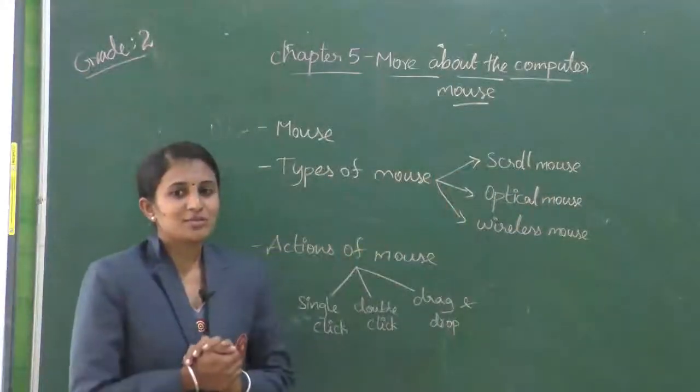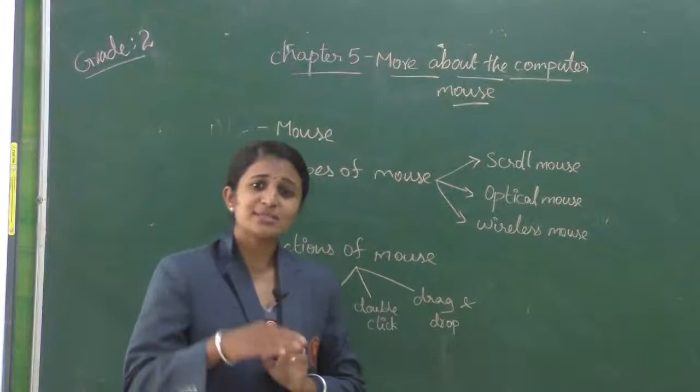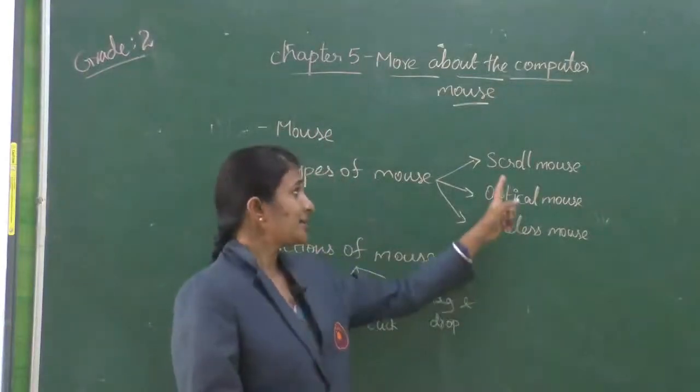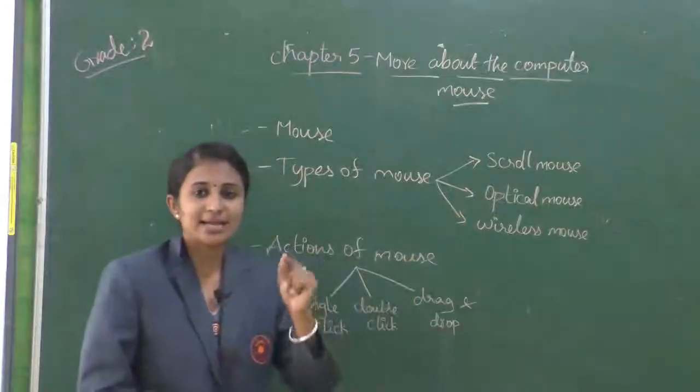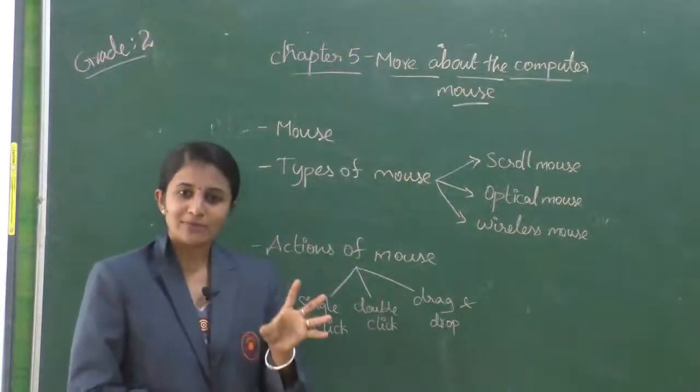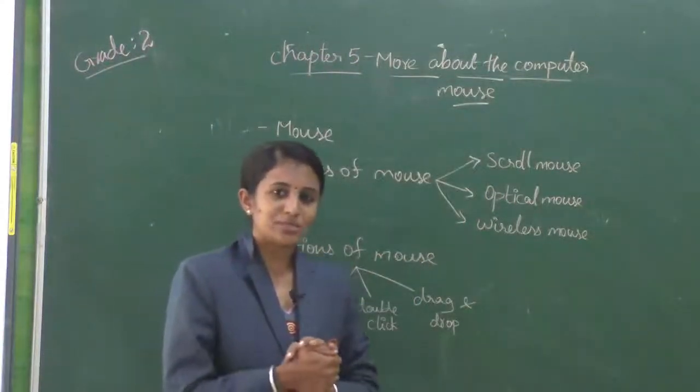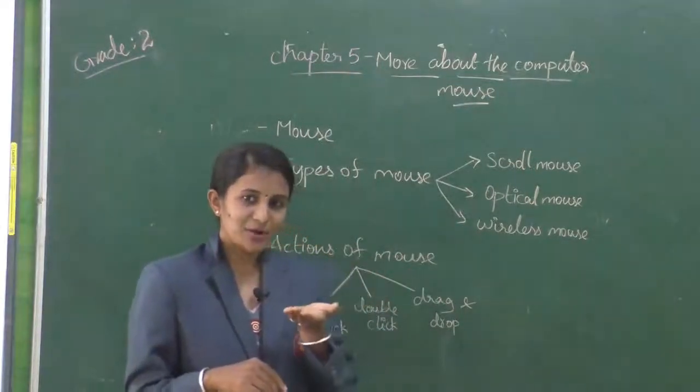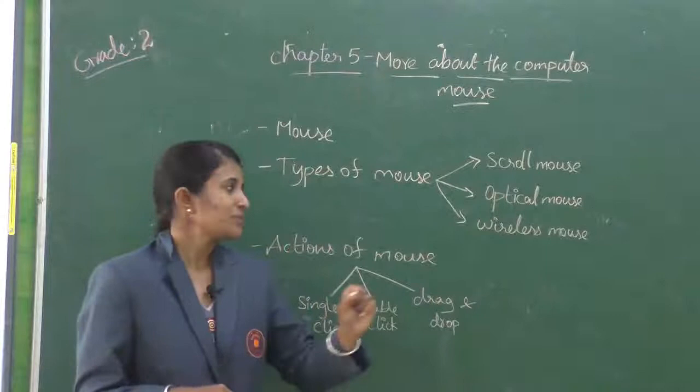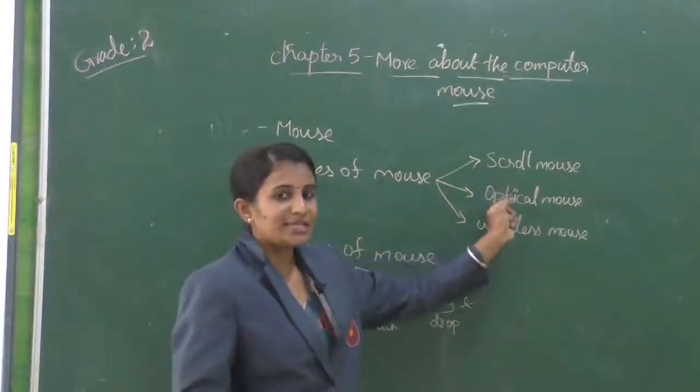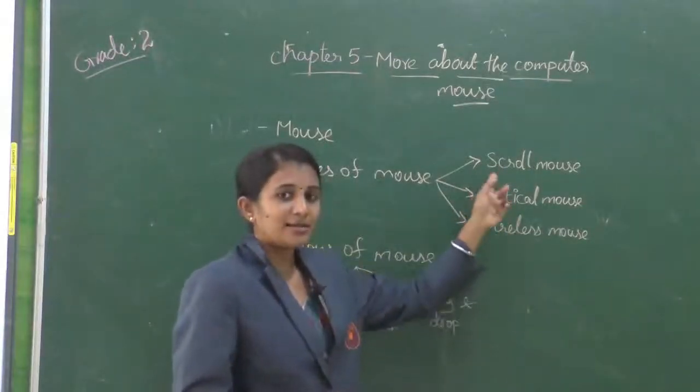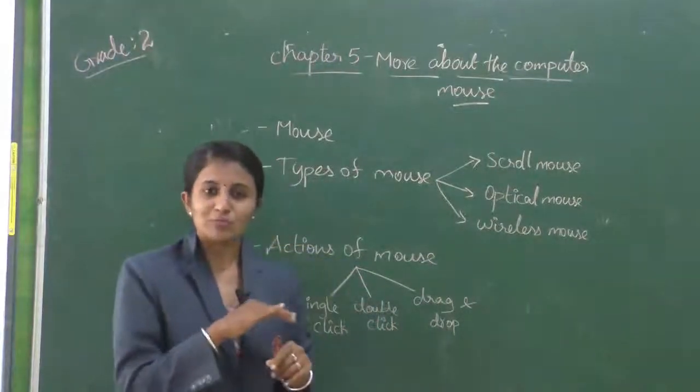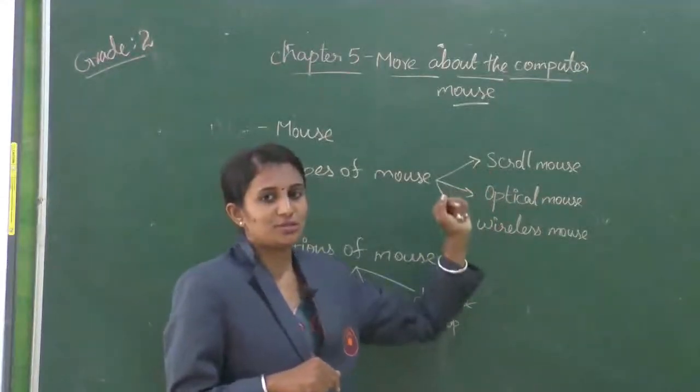First one is scroll mouse. Scroll mouse was used in olden days in desktop computers, indicated by a red light under the mouse. You have seen in desktop computers when we are using, we can see red light under that mouse, that is a red ball. That red ball indicates the mouse is on, and the scroll mouse we use by using the mouse pad. Without mouse pad we can't use the scroll mouse.